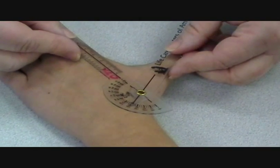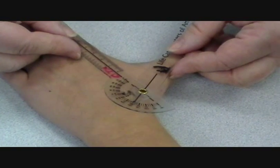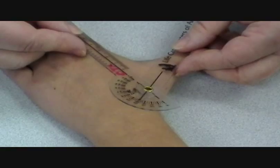Which should place your axis somewhere in the neighborhood of the trapezium. And it looks like we got about 56 degrees.